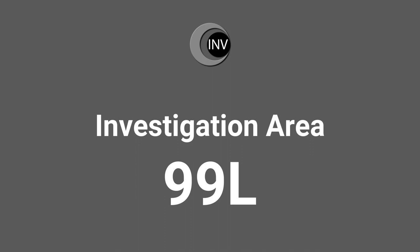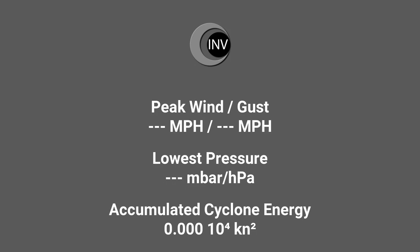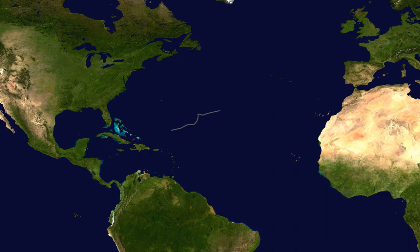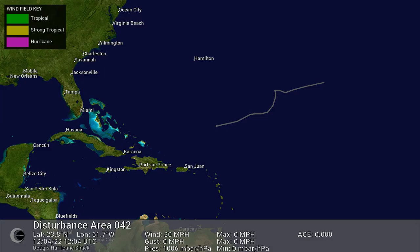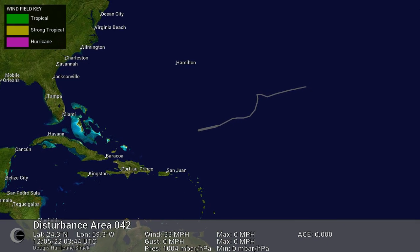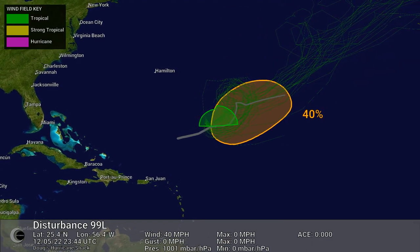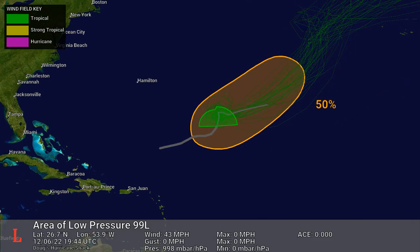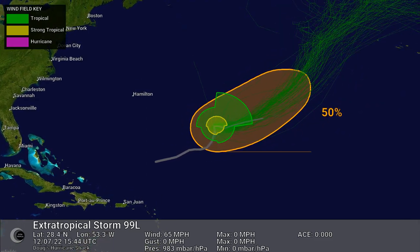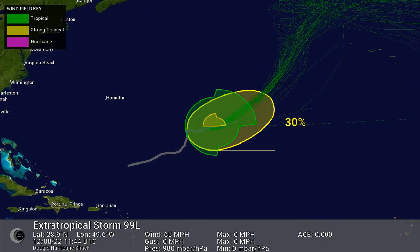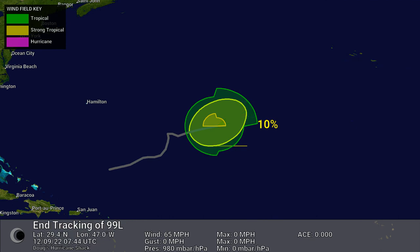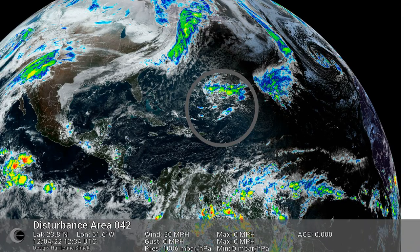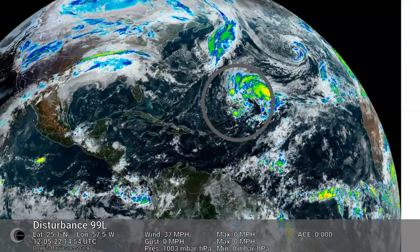Investigation Area 99. Track map of Investigation Area 99. This animation shows the wind field, watches and warnings, ensemble models, and official forecast cone for Investigation Area 99. Basin-wide view highlighting Investigation Area 99. This system remained non-tropical.